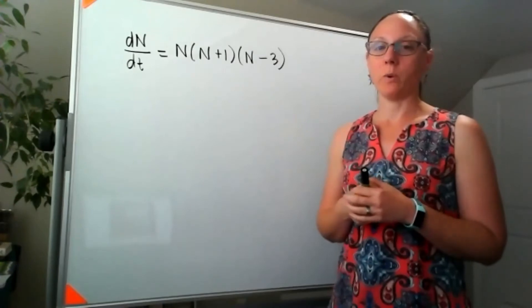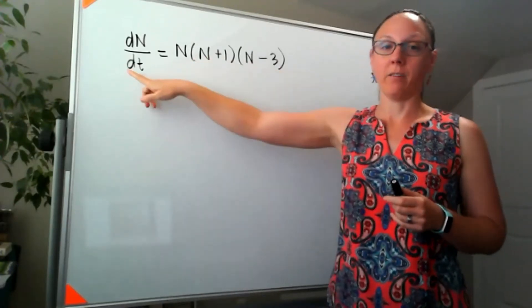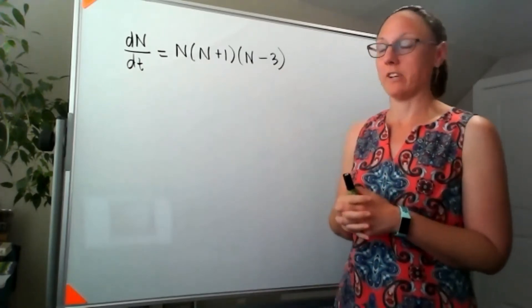So this is a differential equation. It's autonomous because I've only got n's over here, no t's, in terms of that differential equation.